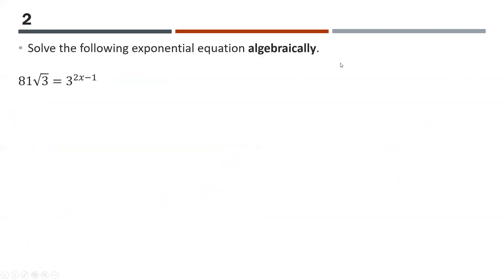Question two: solve the following exponential equation algebraically — no graphing calculator. I'll use the approach of making all bases equal to the same value, which here is 3. 81 is 3 to the power of 4, and the square root of 3 is 3 to the power of 0.5. That equals 3 to the power of 2x minus 1. Since we have 3^4 times 3^0.5, we add exponents to get 3^4.5 equals 3^(2x−1).